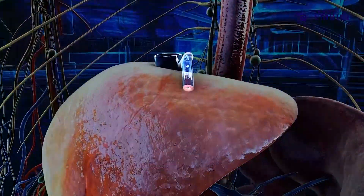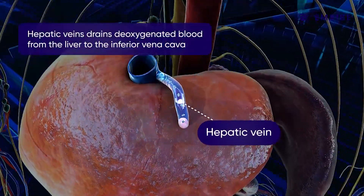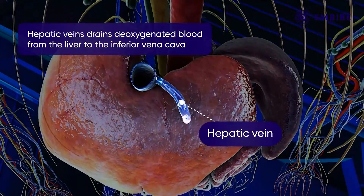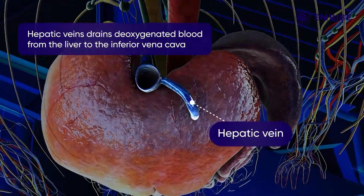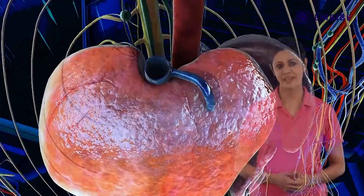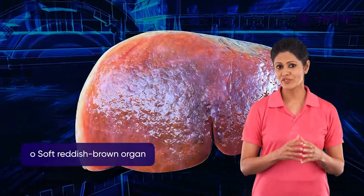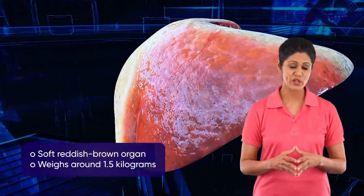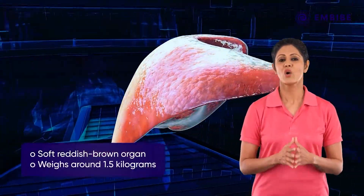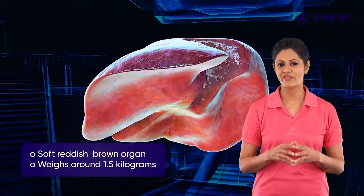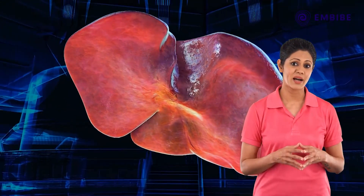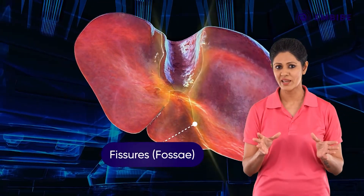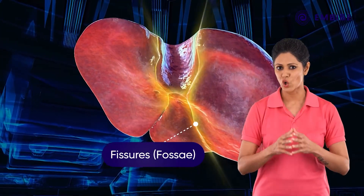The hepatic vein transports deoxygenated blood out of the liver. The liver is a soft reddish-brown organ which weighs around 1.5 kilograms and is divided by fissures or fossae into four lobes.